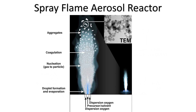The droplets formed during atomization quickly evaporate. The precursor then decomposes in the gas phase due to the intense heat in the flame. Further reactions can occur, which depend on the precursor.